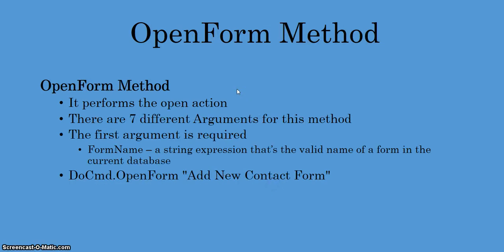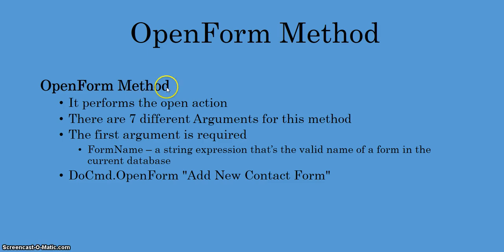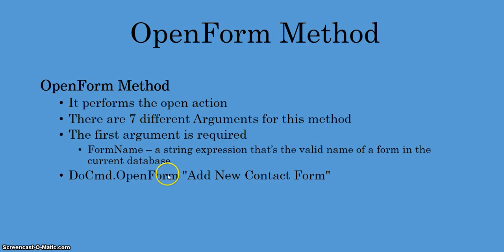The OpenForm method in Access performs an open action. It has seven different arguments, and only the first argument is required. I'll discuss just the first argument, which is called form name. It's a string expression that is the valid name of a form in the current database. The example line of code is DoCmd.OpenForm, and then you pass it a string expression of the exact name of your form in the database.